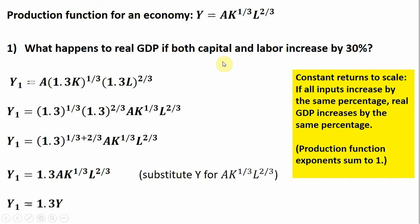Let me prove that if we increase capital and labor by 30%, real GDP would go up by 30%. I have this production function, calling it Y subscript one. Because we're increasing the inputs, we're going to get a different level of output than just Y. To increase capital by 30%, we multiply it by 1.3. We do the same thing for labor—multiply L by 1.3 to increase all inputs by the same percentage.